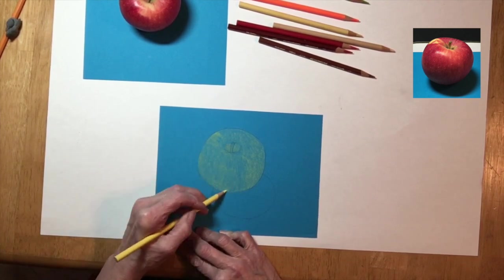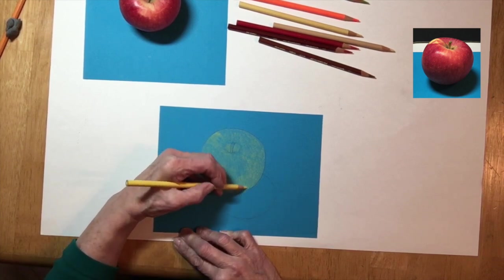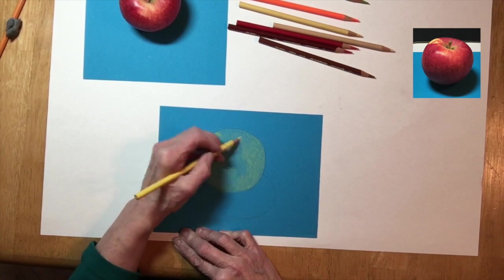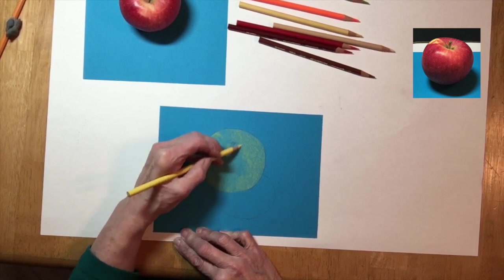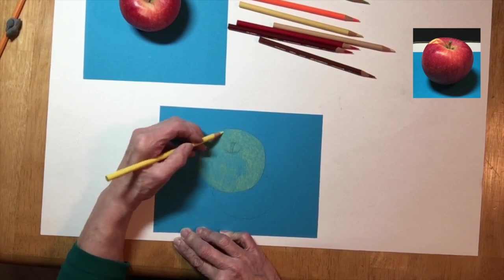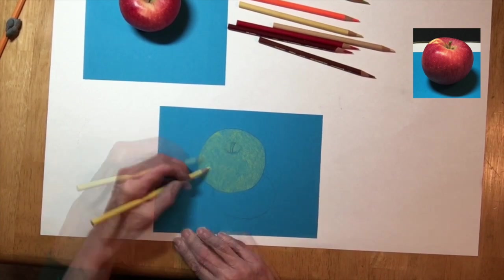Even though I'm going to be covering this all with yellow, I am trying to pay attention to the contours of the apple and adding a little density with the yellow, even though it's still my first layer.